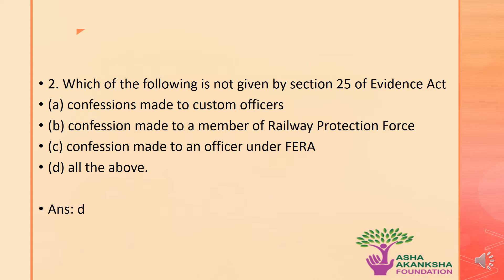The next question is: which of the following is not given by Section 25 of the Evidence Act? The options are: a) confessions made to the custom officer, b) confessions made to a member of the Railway Protection Force, c) confession made to an officer under FARA, or d) all of the above. The correct answer is option d — all of the above options are correct. Under Section 25, confessions made to a custom officer, to a member of the Railway Protection Force, and to an officer under FARA are not given.